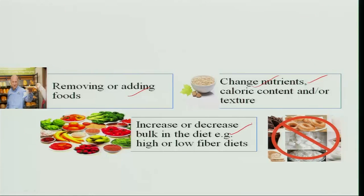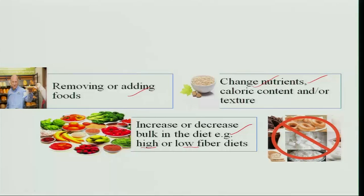The bulk of the diet is increased or decreased through the fiber content. If the person has diarrhea — frequent passage of loose stools — soluble fiber is given, which forms a gel, promotes water uptake, and helps stools become firmer. When there is constipation, where the water content of stools is very low and stools become very hard, a high-fiber diet is given so that stools become softer and easier to pass.